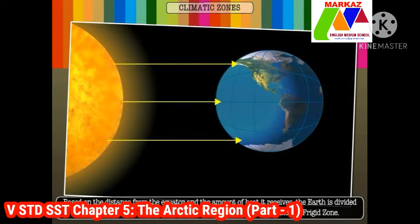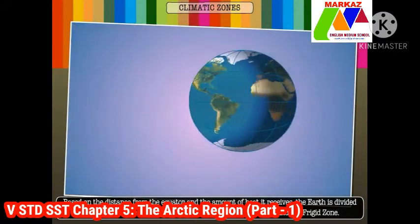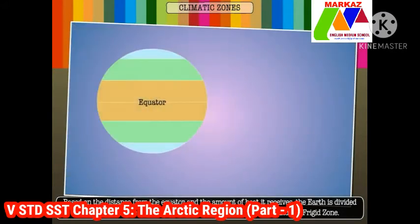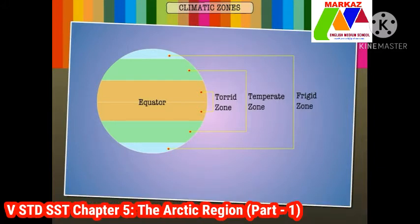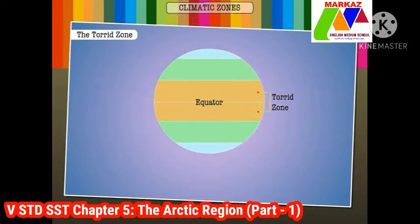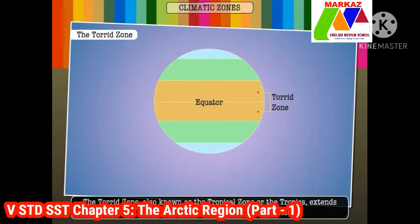Based on the distance from the equator and the amount of heat it receives, the earth is divided into three climatic zones: the torrid zone, the temperate zone, and the frigid zone. Today let us learn a little more about them.